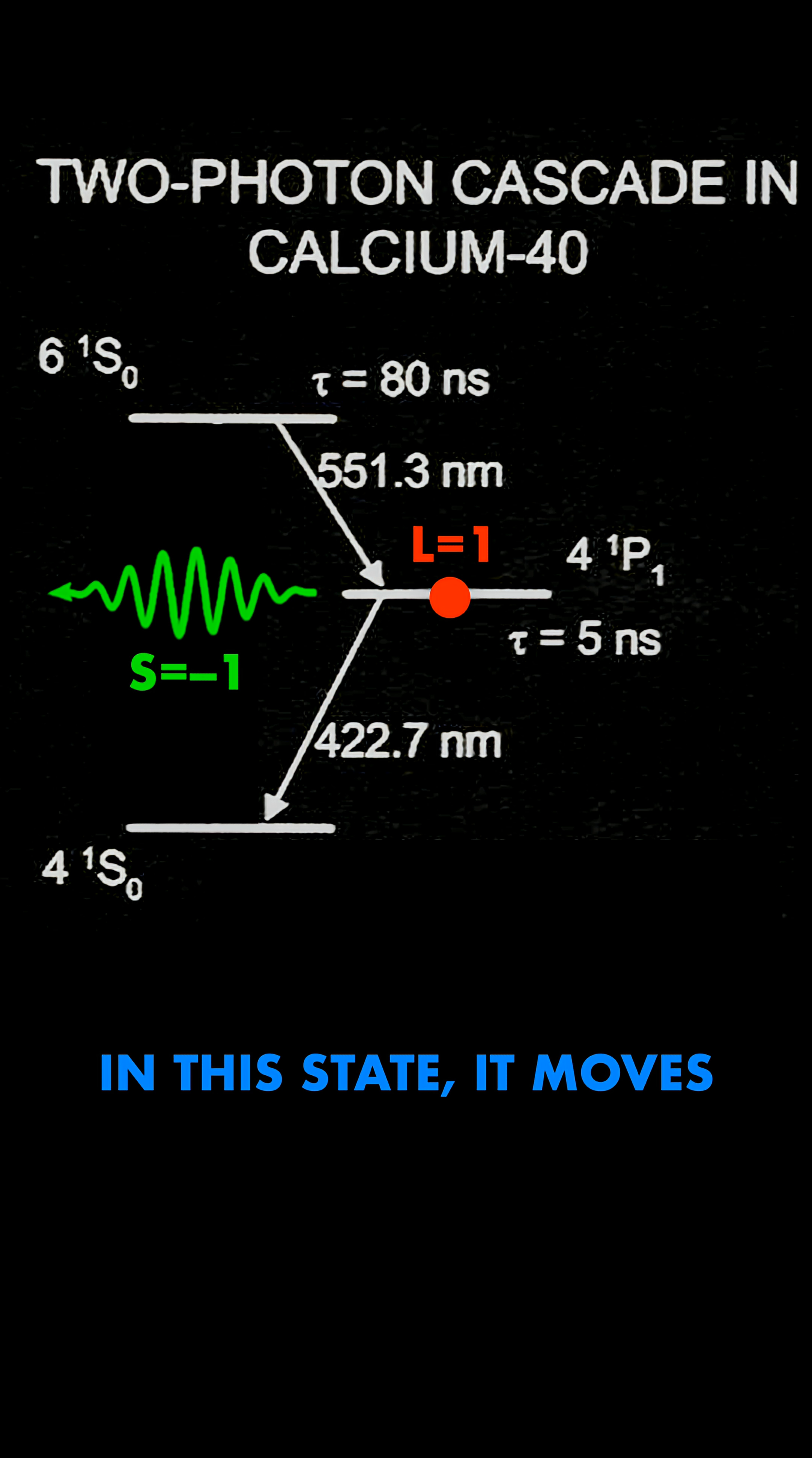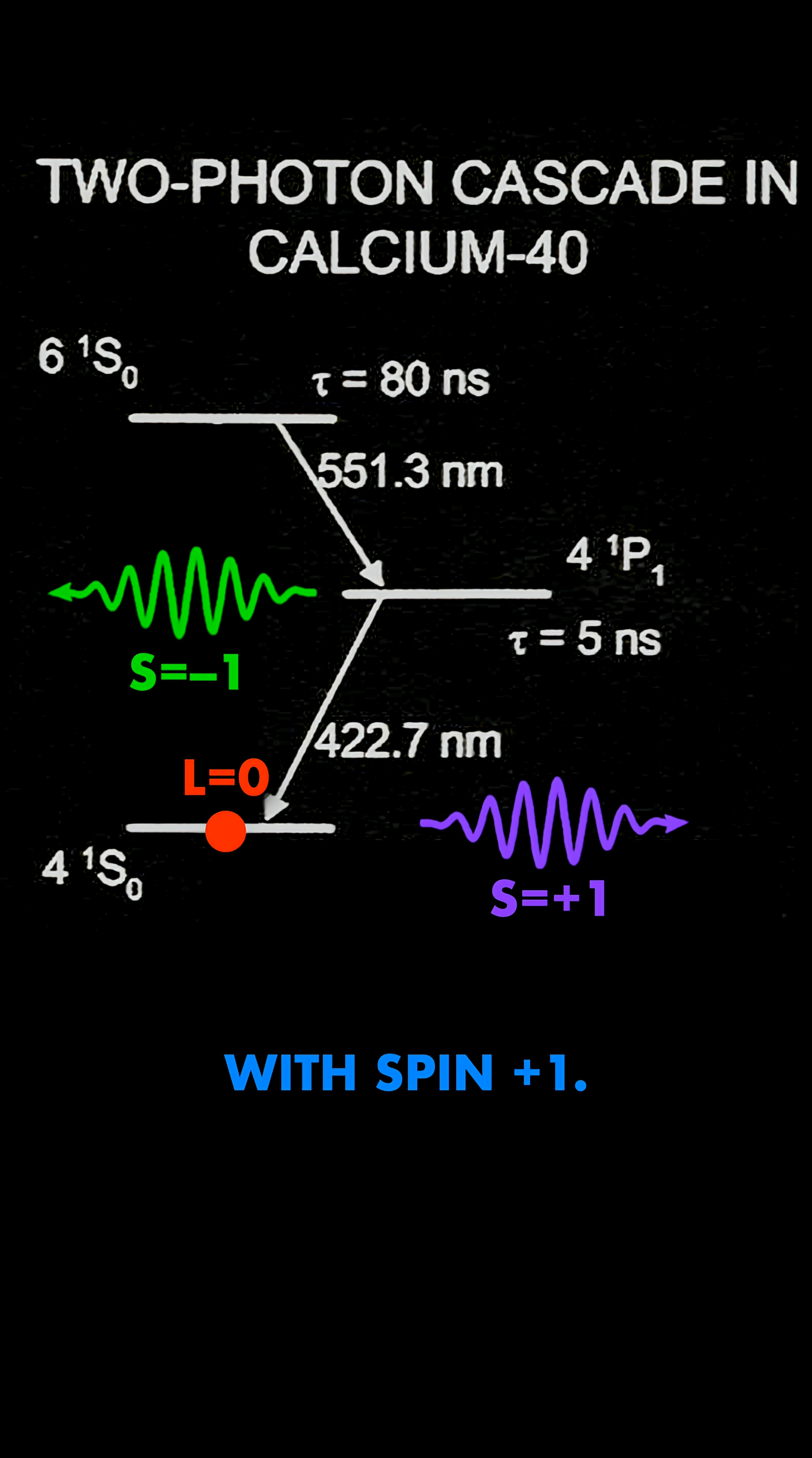Then, after just five nanoseconds in this state, it moves down another level, this time emitting a 422.7 nanometer photon, which is violet, with spin plus one. This sequence of transitions is the cascade.